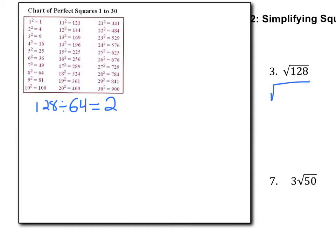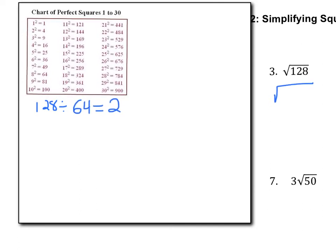So we know that we have the square root of 64 times 2, which we can break apart, to the square root of 64 times the square root of 2, and this is 8 root 2.